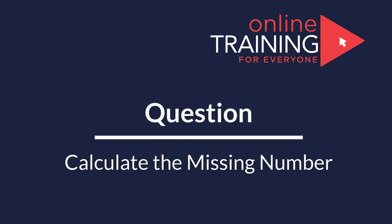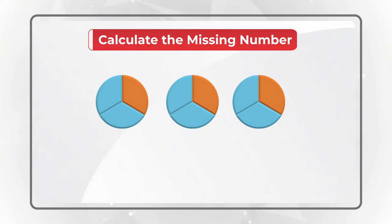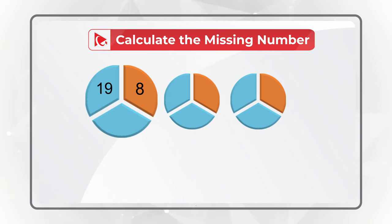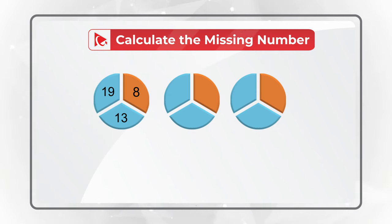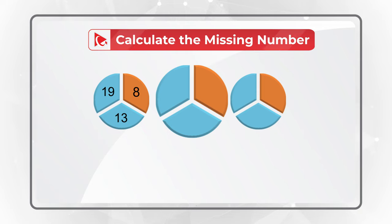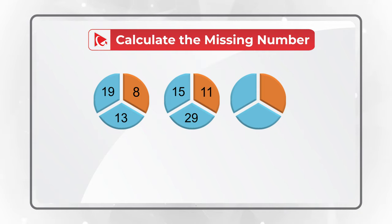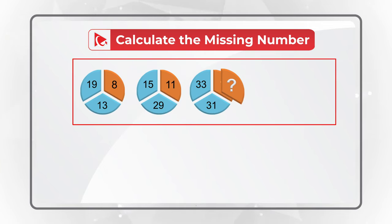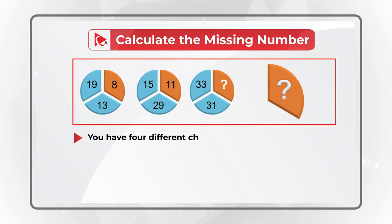Here is a puzzling question which has a very surprising solution. You are presented with 3 circles, each broken into 3 equal parts. The first circle has numbers 8, 19, and 13. The second circle has numbers 11, 15, and 29. The third circle has numbers 33, 31, and then one number is missing. You need to calculate the missing number out of 4 different choices.